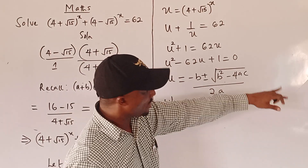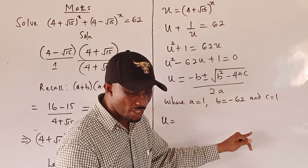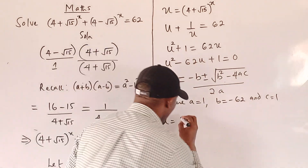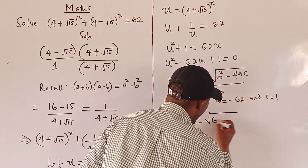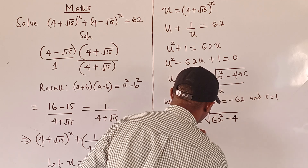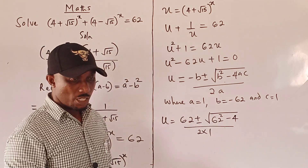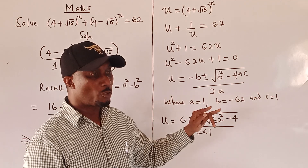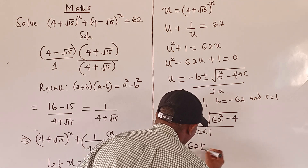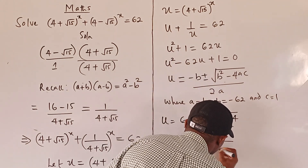Plugging the values of a, b, c into the quadratic formula: u = (−b ± √(b² − 4ac)) / 2a. Because b is negative (−62), we get double negatives giving positive 62. So u = (62 ± √(62² − 4)) / 2 = (62 ± √(3844 − 4)) / 2 = (62 ± √3840) / 2.